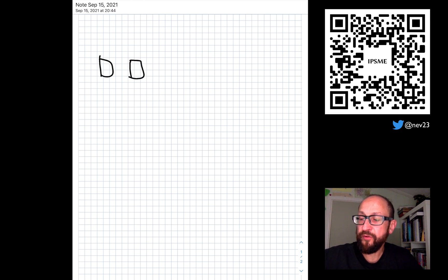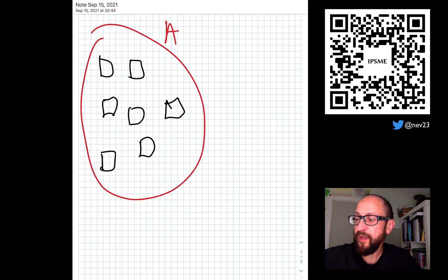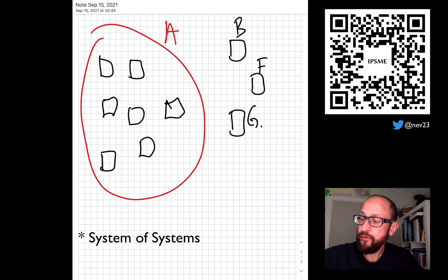So for example, if we have a bunch of systems and all these systems speak a protocol A, and we have a number of systems over here and they speak a different protocol, then the system could have translations from B to A, from F to A, and from G to A.